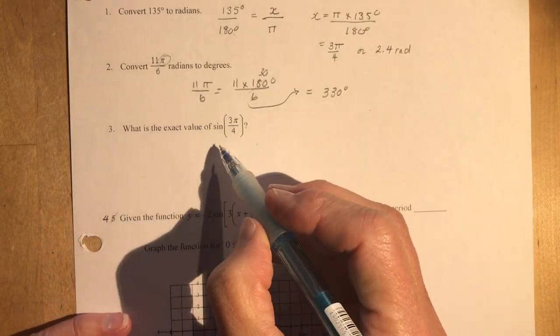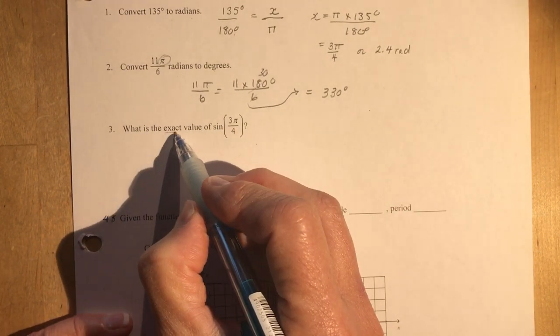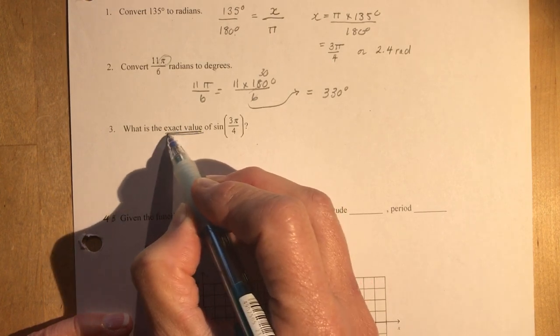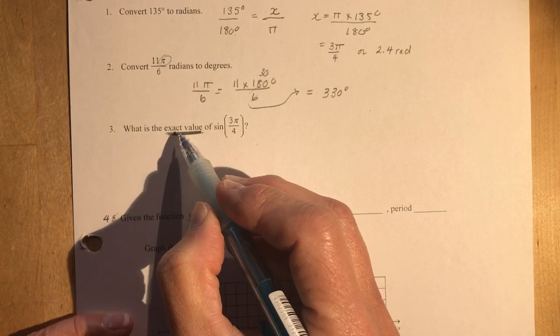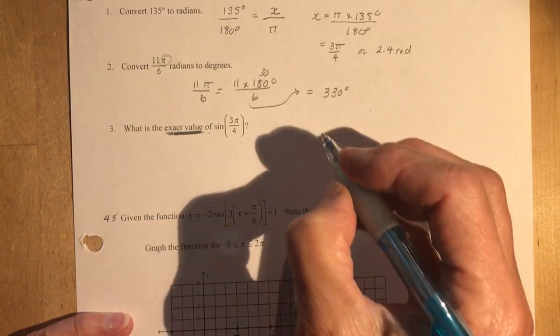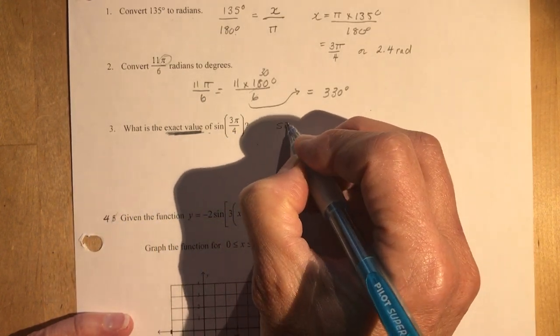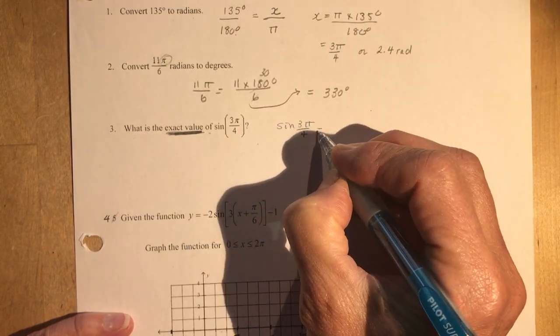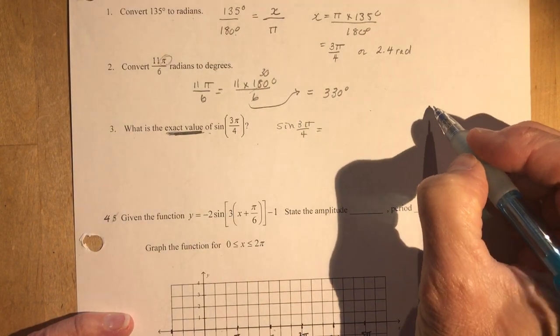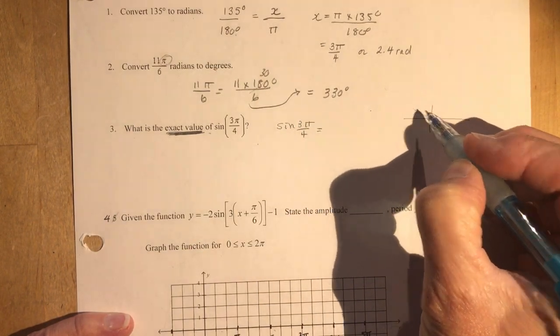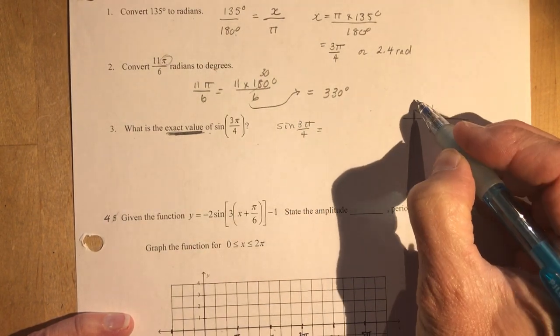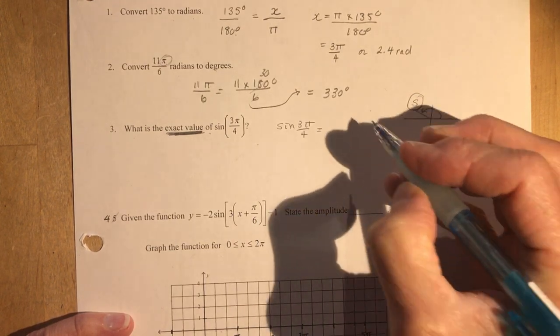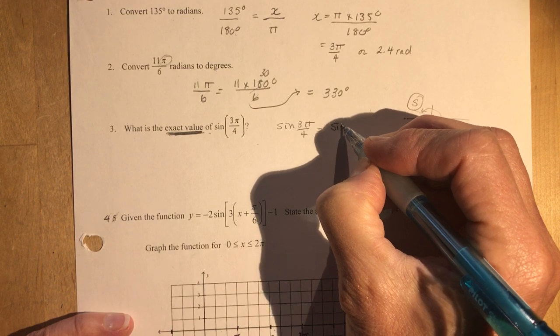Number three, what is the exact value? Don't forget when you see the words exact value, that means you're going to be using your special triangle ratios. So what is the exact value of sine of 3 pi over 4? I would write that sine of 3 pi over 4, I would write its equivalent ratio. So using its acute angle, if I made a quick little sketch here, 3 pi over 4 puts me over here where sine is always positive. So the sine of 3 pi over 4 is the same as sine of pi over 4.